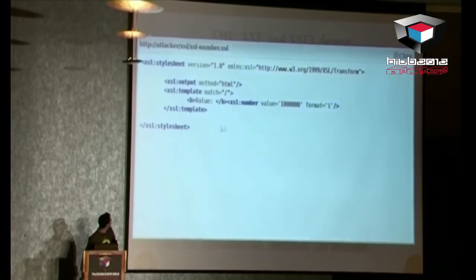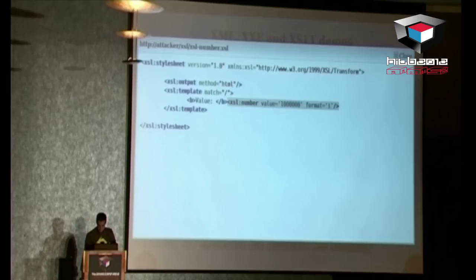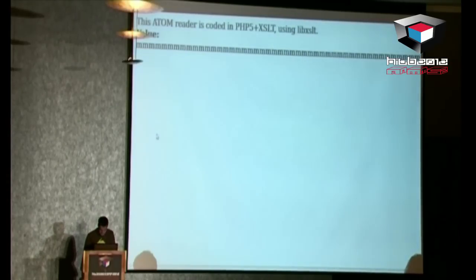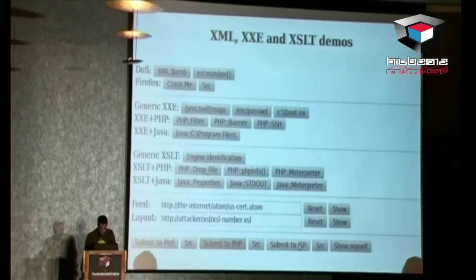The XSL number proof of concept: the Perl application is not using XSLT so no point testing it. In PHP it works. If we submit to JSP, we get an error because it cannot convert values greater than 4,000 — I don't know why, probably to avoid this kind of vulnerability, but there is no documentation related to this behavior.